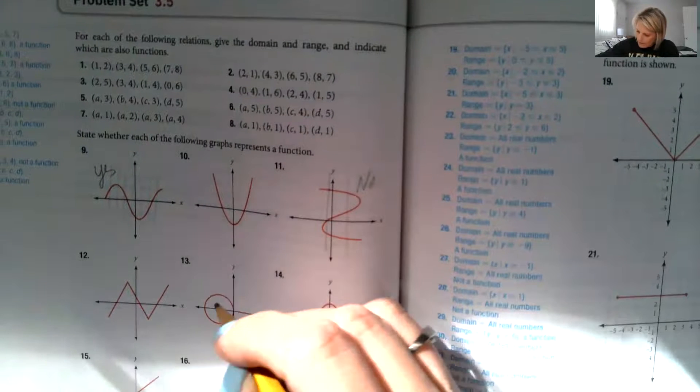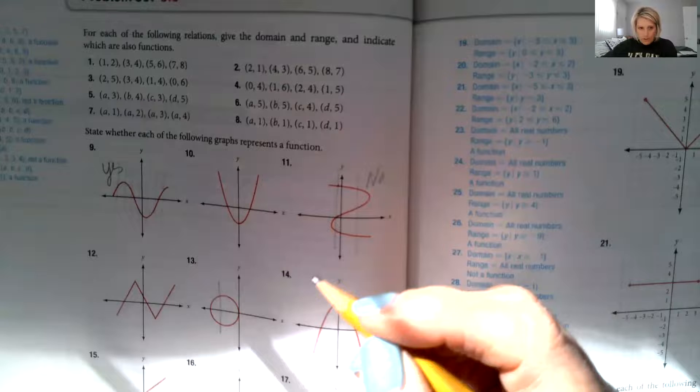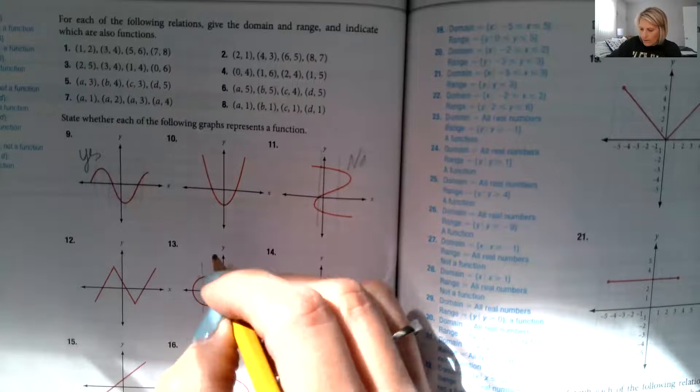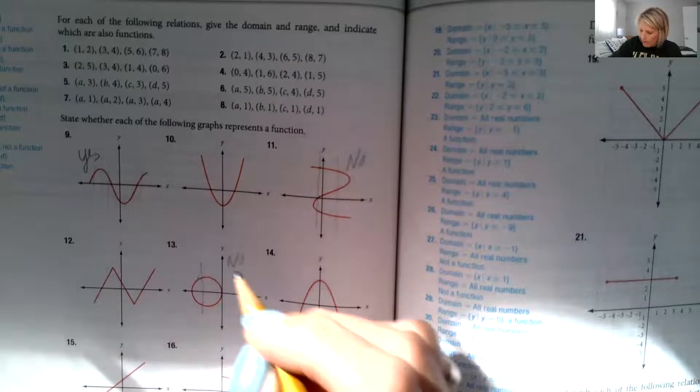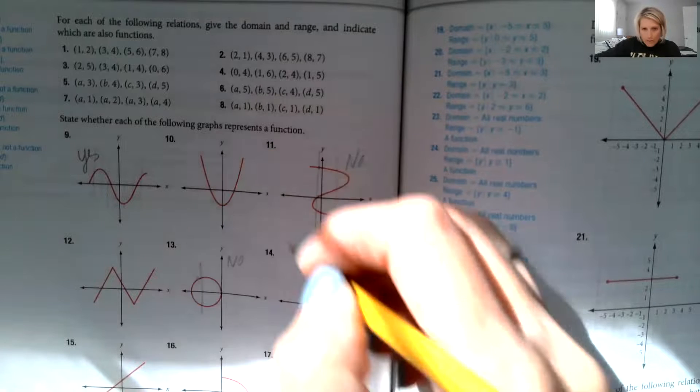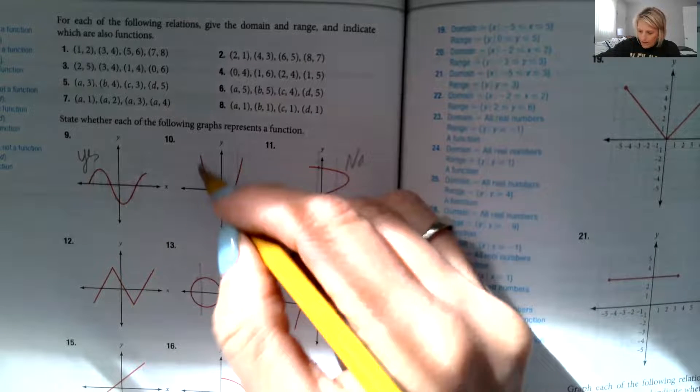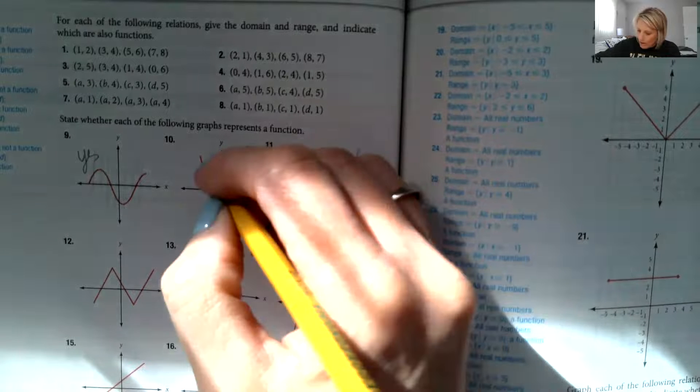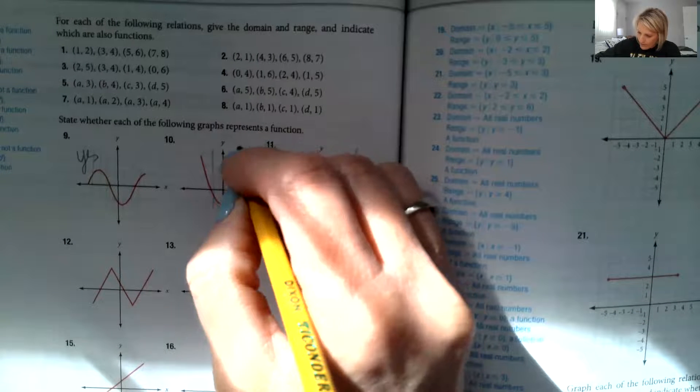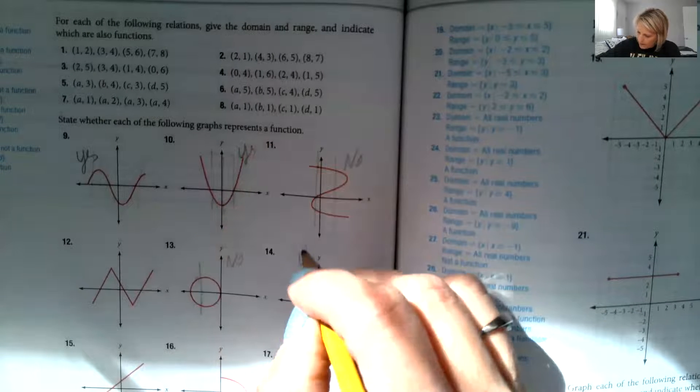13. If I draw one vertical line, I can see I'm crossing that circle twice. Circles are never a function. No. 10 and 14 are both considered parabolas. They make that parabola shape. They're quadratic equations, and those are always functions. So that's a yes and a yes.